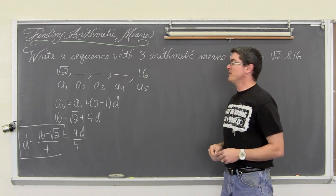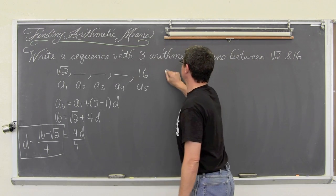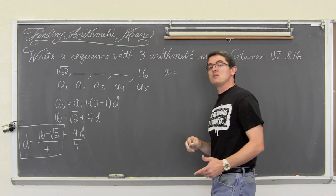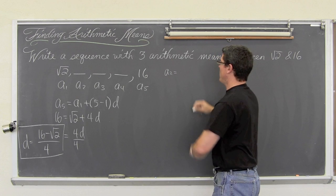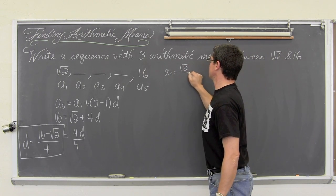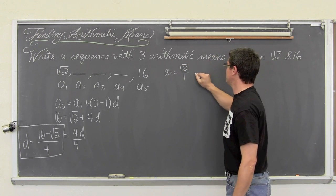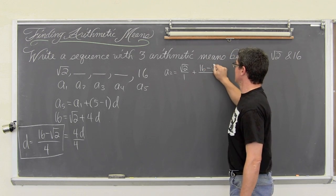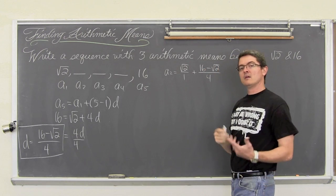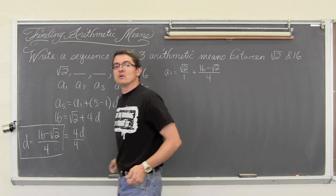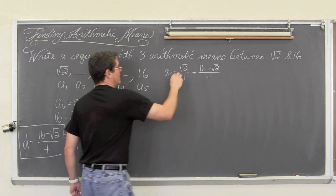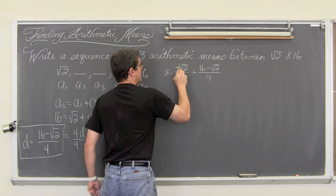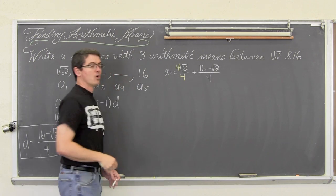Now all I have to do is fill in the blanks. So a sub 2 is equal to a sub 1, which is square root of 2 over 1 plus our common difference of 16 minus square root of 2 over 4. Well, you can't add fractions if you don't have a common denominator. So we are going to multiply the top and bottom of a sub 1 by 4.